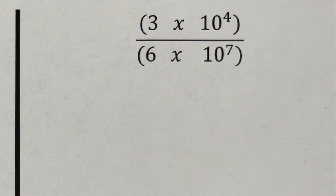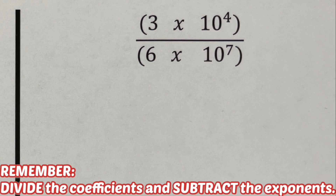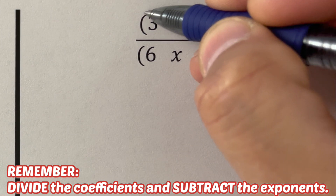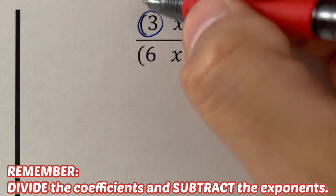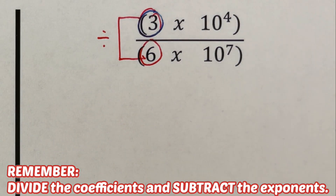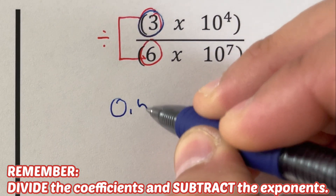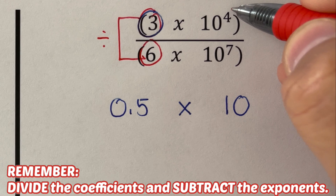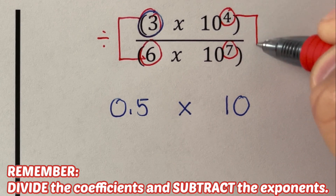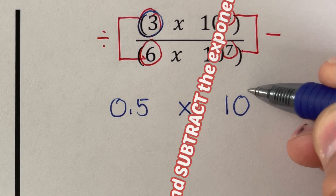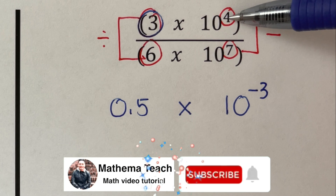For the next problem, we divide the coefficients and subtract their exponents. So 3 divided by 6 is 0.5, times 10 to the power of 4 minus 7, which is negative 3. So we get 0.5 times 10 to the power negative 3.